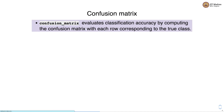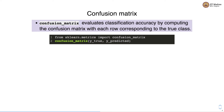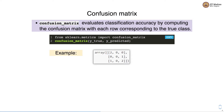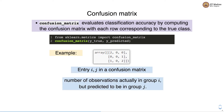Let's study the confusion matrix. The confusion matrix evaluates classification accuracy by computing a matrix where each row corresponds to the true class. It is implemented in sklearn.metrics — we can import confusion_matrix from sklearn.metrics and compute it by providing the actual labels and the predicted labels. The i,j-th entry in the confusion matrix gives us the number of observations actually in group i that are predicted to be in group j.